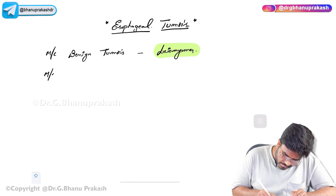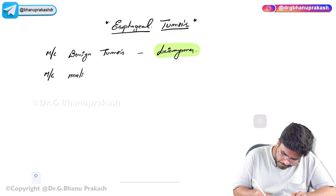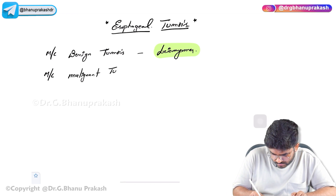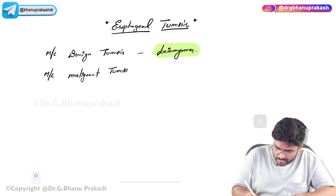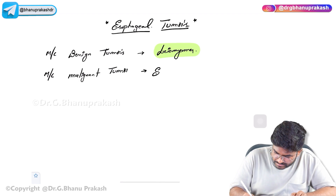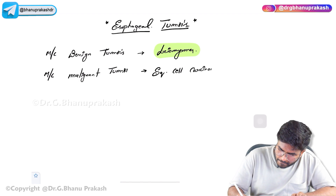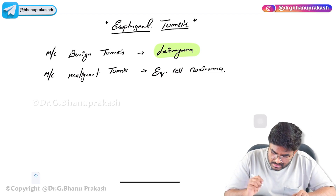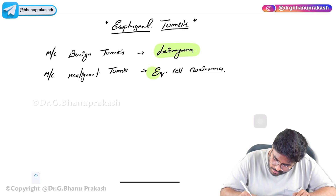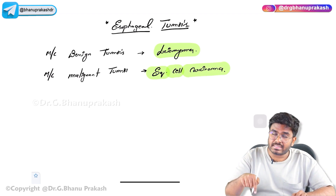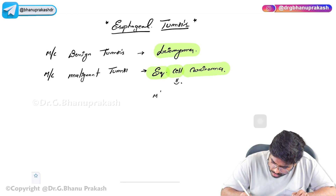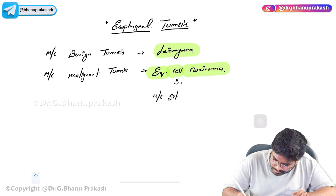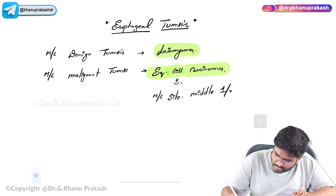The most common malignant tumor is squamous cell carcinoma of the esophagus. As discussed in the previous video on Barrett's esophagus, squamous cell carcinoma is the most common esophageal cancer. The most common site is the middle one-third of the esophagus.